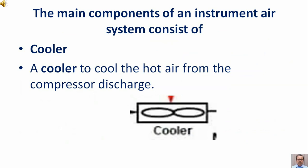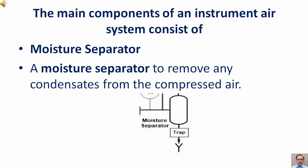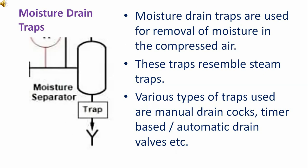Cooler: A cooler is required to cool the hot air from the compressor discharge. Moisture separator: A moisture separator is required to remove any condensate from the compressed air. Moisture drain traps: These are used for removal of moisture in the compressed air. These traps resemble steam traps. Various types used include manual drain cocks, timer-based or automatic drain valves, etc.